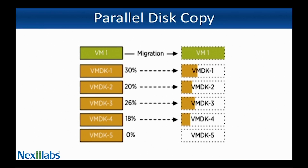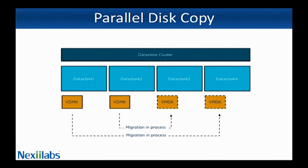vSphere 5.5 allows up to four parallel disk copies per Storage vMotion operation. When you migrate a virtual machine with five VMDK files, Storage vMotion copies the first four disks in parallel, then starts the next disk copy as soon as one of the first four finishes. To reduce performance impact on other virtual machines sharing the datastores, parallel disk copies only apply to disk copies between distinct datastores. This means that if a virtual machine has multiple VMDK files on Datastore 1 and Datastore 2, parallel disk copies only happen if the destination datastores are Datastore 3 and Datastore 4.